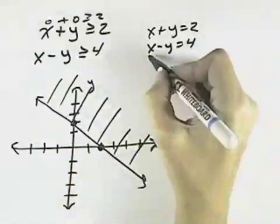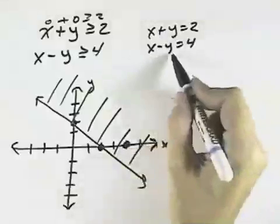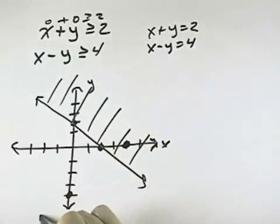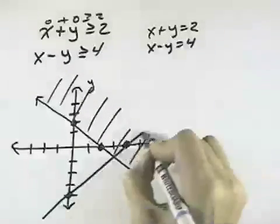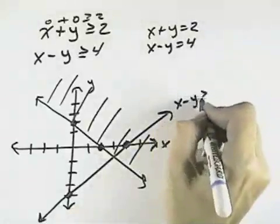For my next equation, if y is 0, x is 4 would be my intercept. And if x is 0, y would be negative 4 is my intercept. So plotting a straight line through those points, I have my line for x minus y is greater than or equal to 4.